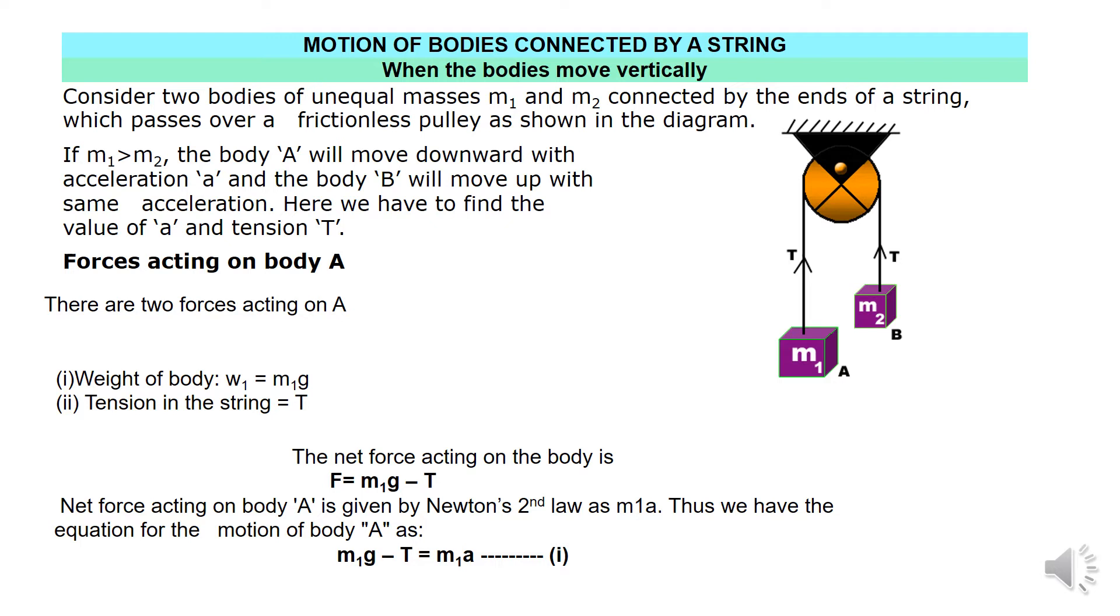So here the body, since it is moving downward, as you can see, the weight is greater than the force and the tension. So W minus T is equal to F, F is your net force acting on the body. So since it is M1, the mass of the body.